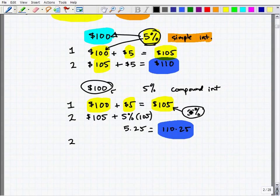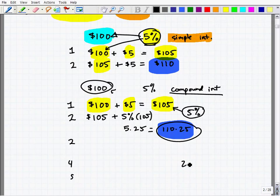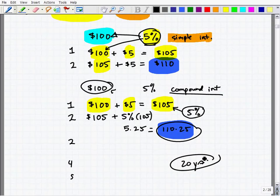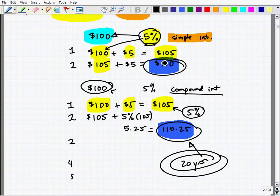This compound interest will start taking off. When you go into year three, year four, and year five, if you keep doing this for, let's say, 20 years, there will be a dramatic, a significant difference between how much money you earned using compound interest than simple interest.